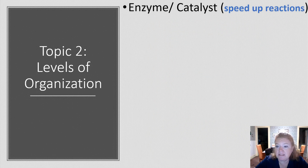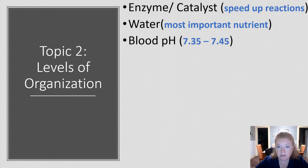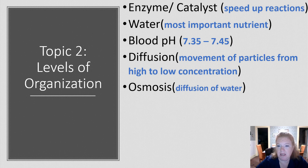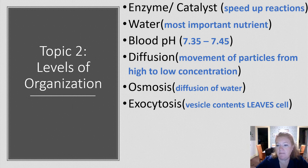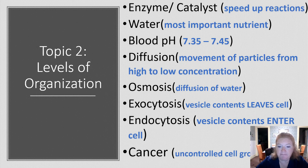The important things to remember: an enzyme or catalyst speeds up reactions. Water is the most important nutrient. Blood pH is between 7.35 and 7.45. Diffusion is the movement of particles from high to low concentration, and osmosis is the diffusion of water. Exocytosis is when vesicle contents leave the cell, like when hormones are released. Endocytosis is when vesicle contents enter the cell, like when a white blood cell engulfs bacteria. And cancer is uncontrolled cell growth.